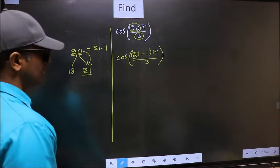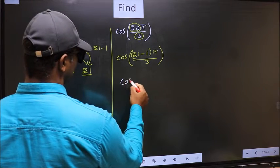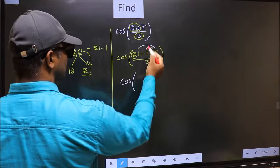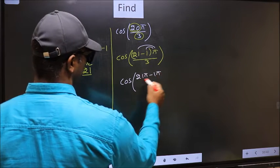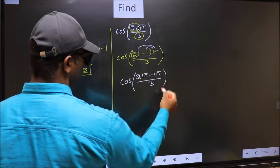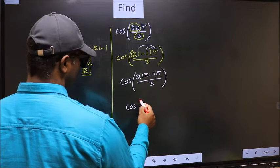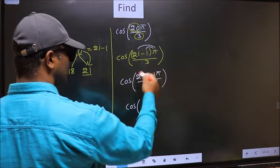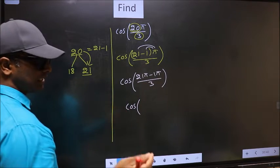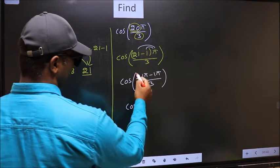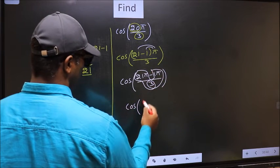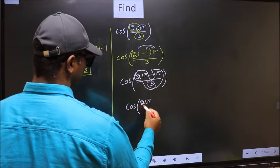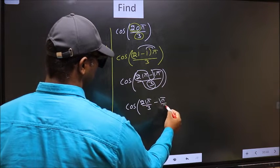Next, cos. Now you should open up the brackets. You get 21π minus 1π by 3. Now cos, in this, you should split the denominator in this way. That is 21π by 3 minus 1π by 3.